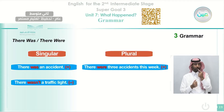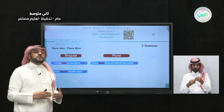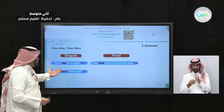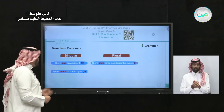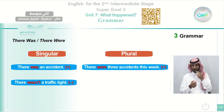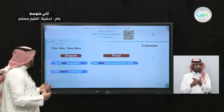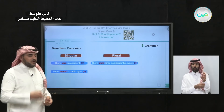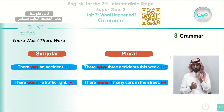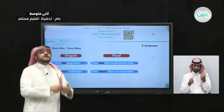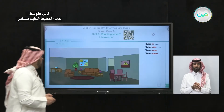Now the negative form. When you use negative, you put 'not' after the verb 'be.' 'There wasn't a traffic light' — why, why was there an accident? Because there wasn't a traffic light. For plural with negative form: 'there weren't many cars in the street' — there were few cars. This is the negative form.